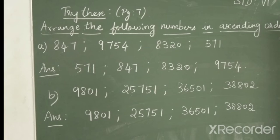First one: 847, 9754, 8320, and 571. So, in this question, 3-digit numbers and 4-digit numbers are given.